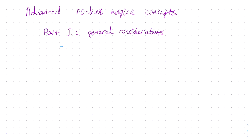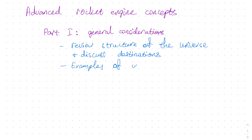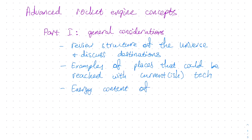In the first part, we are basically going to discuss the background, that is, general considerations for rocket engines. First, we are going to talk about the structure of the universe, and the point is to figure out where can our rockets take us. Next, we are going to look at some examples of places we can actually reach with either current or almost current rocket technologies. And finally, to understand the basics of how do we go to faraway places in space, we are going to discuss the energy content of rocket fuel.